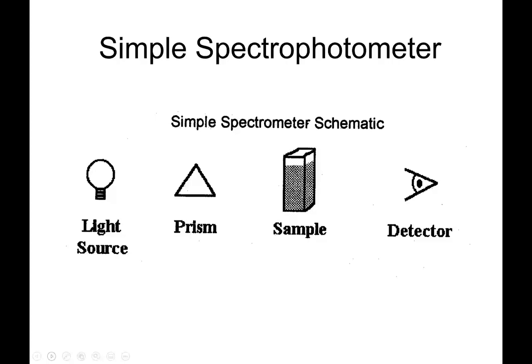Here's how we make one. We take a light source—and all light sources, unless it's a laser, are going to have a broad variety of wavelengths. You pass that through a prism, which separates out the various wavelengths of light. You could also use a grating instead of a prism. The easiest place to see a grating is if you have a CD—if you hold it up to the light and move it back and forth, you'll see the rainbow colors. We need something to separate the light into individual wavelengths, then pass it through the sample, and then we've got a detector to measure how much light made it through.